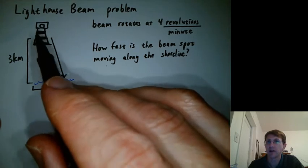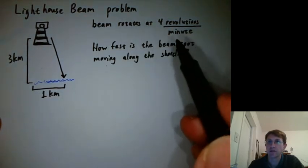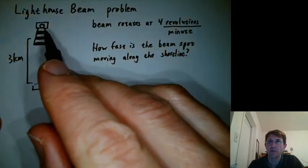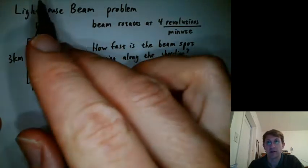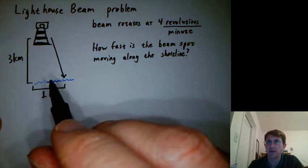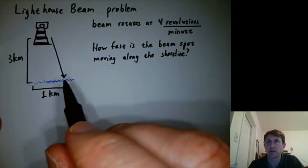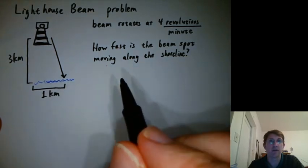Suppose you have a lighthouse that's on an island three kilometers offshore and the beam rotates at four revolutions per minute. Sometimes it's out to sea and sometimes the beam is pointing at the shoreline, and we're wondering how fast is the beam moving along the shoreline. If you were running along the beach, could you keep up with the beam, for example?